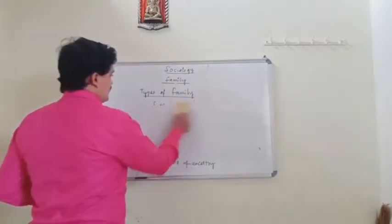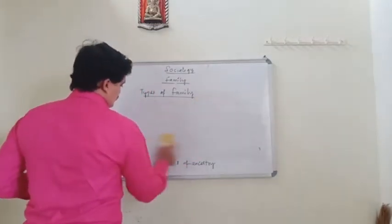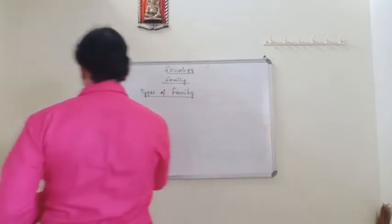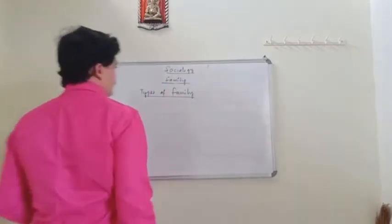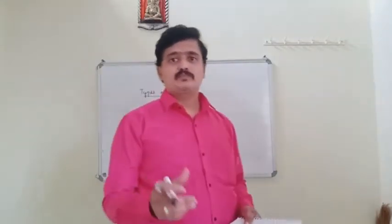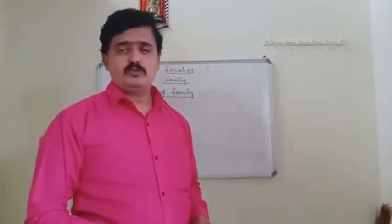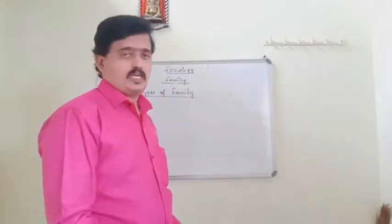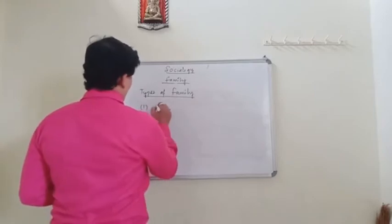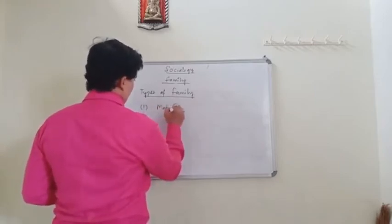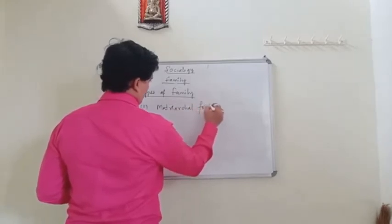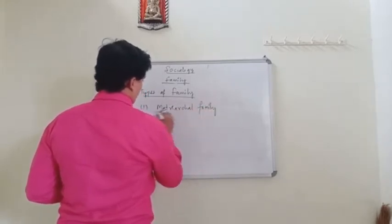But nowadays in society, we are going to see three kinds of families. Now let's study about what is matriarchal family, joint family, and nuclear families, which we see in modern society.